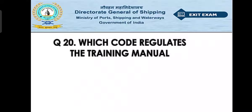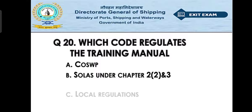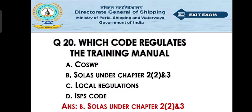Question number twenty: which code regulates the training manual? Option A: COSWAP. Option B: SOLAS chapter 2 and 3. Option C: local regulation. Option D: ISP code. The right answer is option B — SOLAS chapter 2 and 3. All regulations and training manuals come under the Safety of Life at Sea (SOLAS) convention.